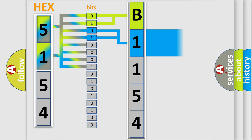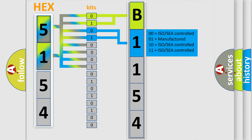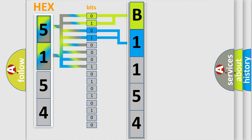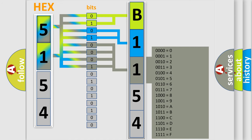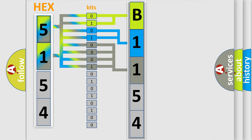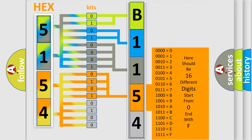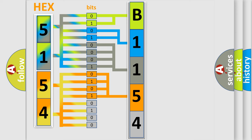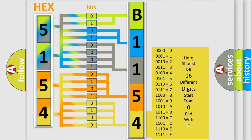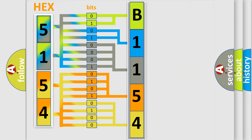The next two bits determine the second character. The last bits of the first byte define the third character of the code. The second byte is composed of a combination of eight bits. The first four bits determine the fourth character of the code, and the combination of the last four bits defines the fifth character. A single byte conceals 256 possible combinations. We now know how the diagnostic tool translates the received information into a more comprehensible format.